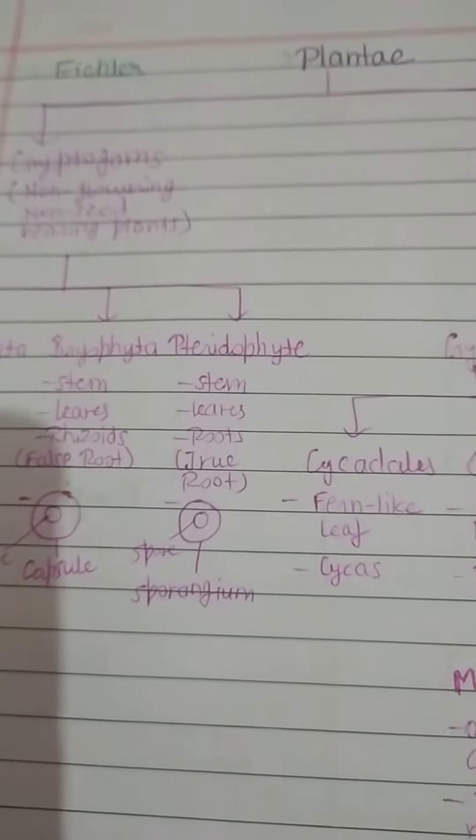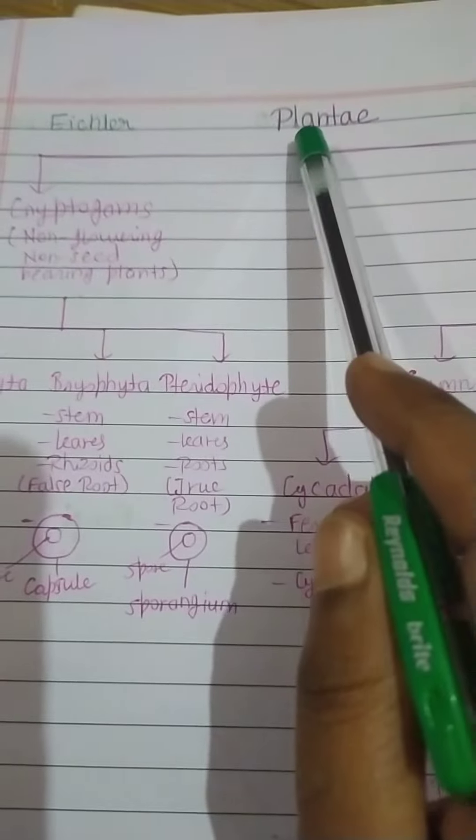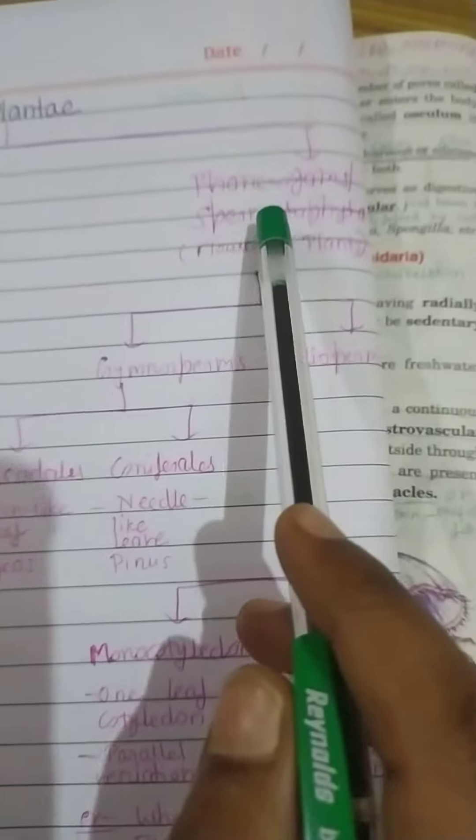They make their own food by the means of photosynthesis. The Plantae classification divides Plantae into two parts: that is Cryptogames and the Phanerogames.